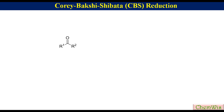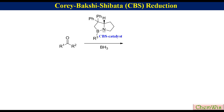CBS Reduction is the reduction of a ketone with borane in the presence of chiral oxazaborolidine as a catalyst, called CBS catalyst, to produce one enantiomer of the alcohol as the major product, where R3 is H or an alkyl group.